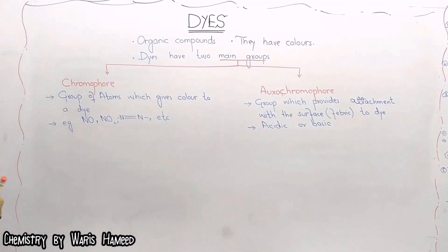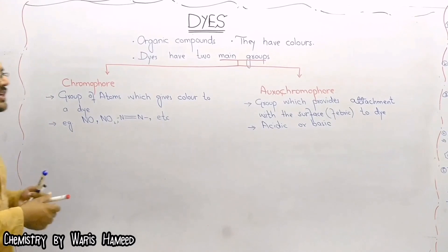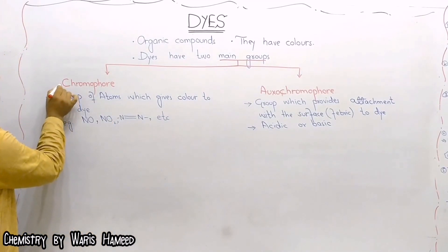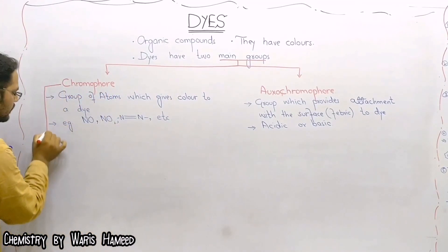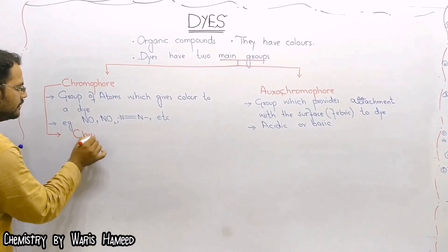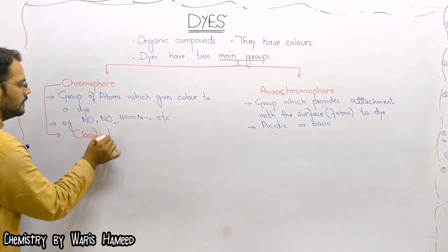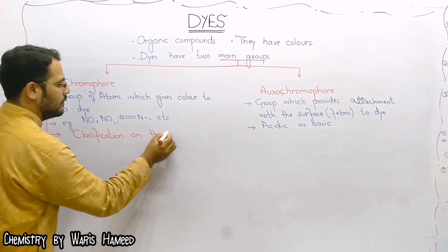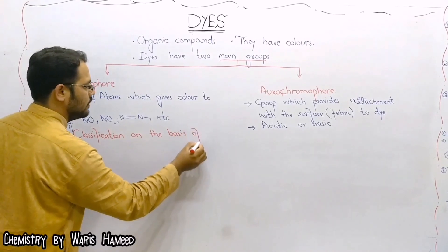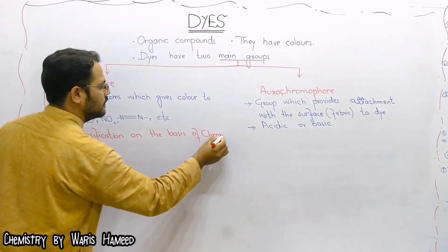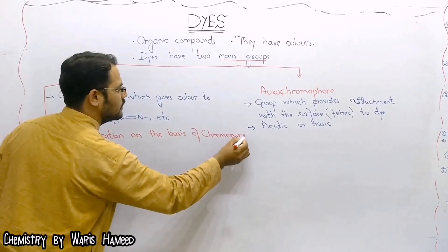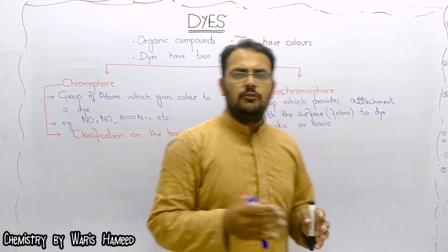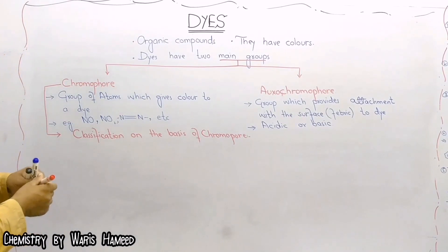We classify the dyes on the basis of chromophore. The classification is on the basis of chromophore. We classify the dyes on the basis of chromophores into almost five categories.